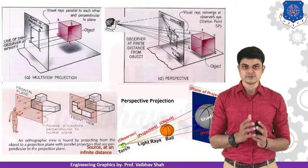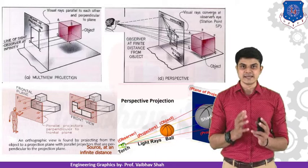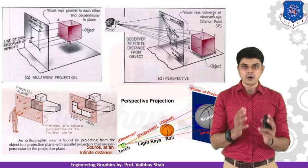Ortho means 90 and graphic means to drop. So whenever you are looking at any object from 90 degrees to its direction, then it is known as orthographic projection.